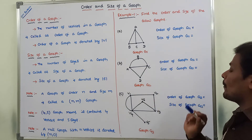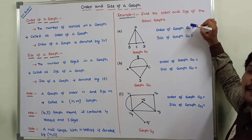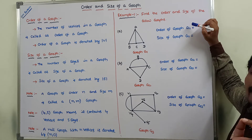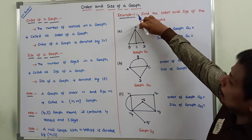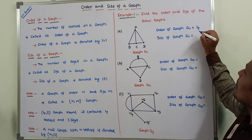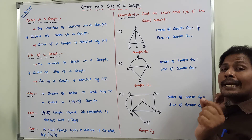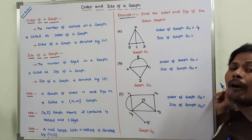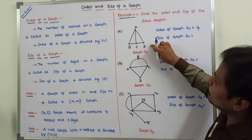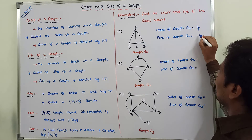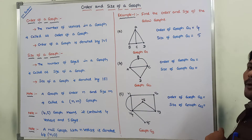Now consider graph G1. Order of graph G1 means the number of vertices present in graph G1. How many vertices are there? 1, 2, 3, 4. So order of graph G1 is equal to 4. Next, size of graph G1 means the number of edges present in graph G1. So size of graph G1 is 5.